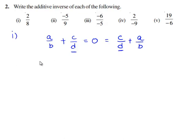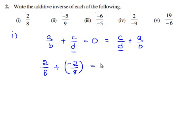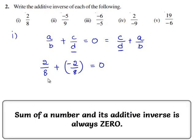The additive inverse of 2 by 8 is minus 2 by 8, as 2 by 8 plus minus 2 by 8 gives 0. Therefore, the additive inverse of 2 by 8 is minus 2 by 8.